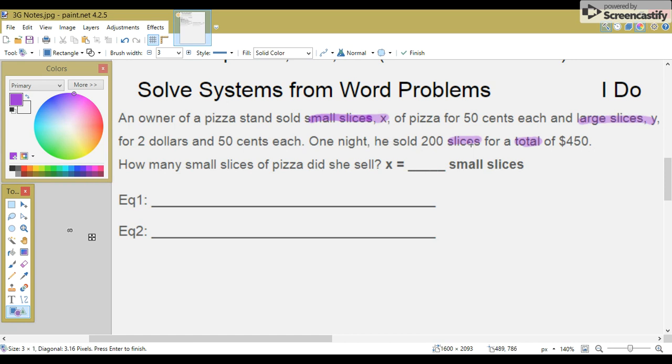Now, let's go back through and box our numbers. We have 50 cents for the small slices, and then $2.50 for the large slices. The total was 200 slices, and the total money was $450.